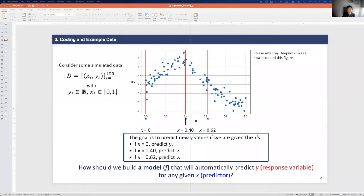The simple goal for this example case is that we want to predict y when the x values are 0.4 and 0.62. We can maybe guess that the y value is around 1 when x is 0, when x is 0.4 the y value is around 7,